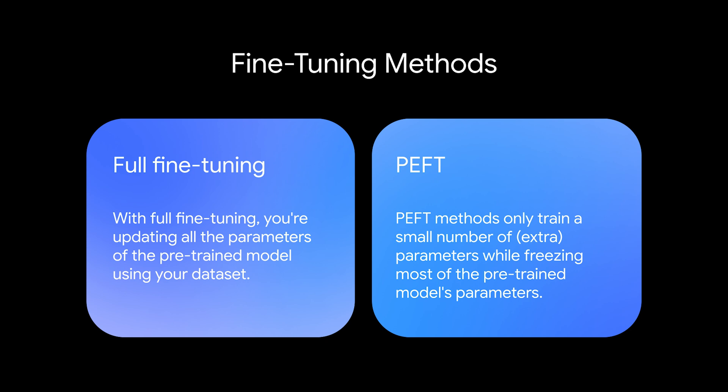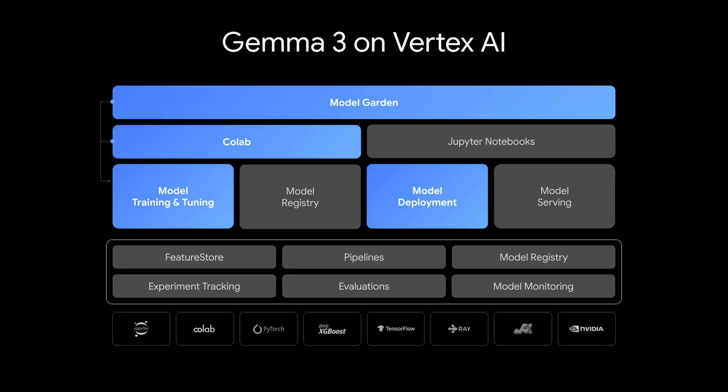The great thing is Vertex AI provides built-in support for fine-tuning Gemma 3 using the LoRA technique. Traditionally, fine-tuning large models can be complex, requiring deep knowledge of training frameworks and significant infrastructure management. Just like we've seen with deployment, Vertex AI simplifies this process significantly by abstracting complexity like managing hardware away, while still offering control over the fine-tuning process. Before we look at the demo, we need to make sure our training data is in the right format.